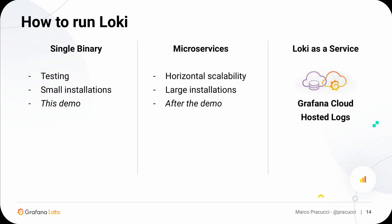There are three ways to run Loki. The first and easiest is the single binary mode — Loki is just one binary, much like Prometheus. You can download it, run it on your computer, or run it with some limitations on multiple nodes in a small cluster. It's usually used for smaller installations and it's the way I'm going to run Loki in the demo. The second way is the microservices mode, where you deploy each internal service separately to horizontally scale each component. We'll see the microservices architecture in the second half of the presentation — this is used for large installations and is how we run Loki at Grafana Labs.